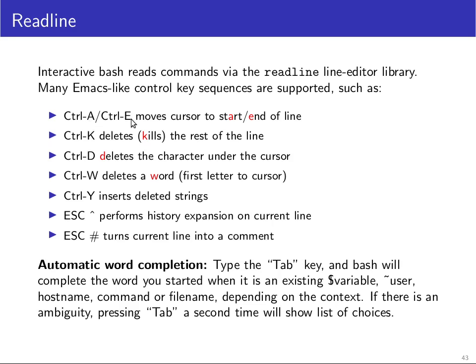ctrl+A and ctrl+E move to the start and end of a line. ctrl+K is the kill command — it deletes the rest of the line, or the entire line if you are in the first column. So if you want to get rid of an entire line, press ctrl+A then ctrl+K and you will be left with an empty line. ctrl+D deletes the character under the cursor, whereas backspace deletes the character to the left. ctrl+W deletes an entire word from the first letter of the word to the cursor position — so if you just typed an entire word incorrectly, press ctrl+W and it's gone.